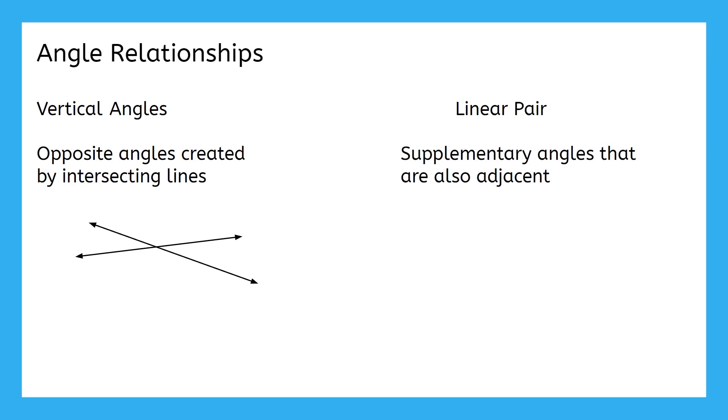These are vertical angles and so are these. And linear pairs are supplementary angles that are also adjacent. We learned about supplementary angles a moment ago, but now imagine that the two supplementary angles have to share a ray. Basically, these two angles are supplementary, but they're not a linear pair. And these two angles are supplementary and are a linear pair.